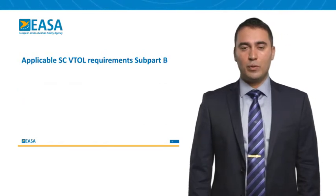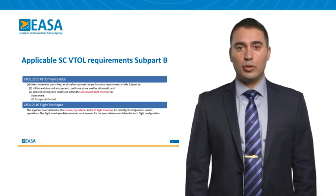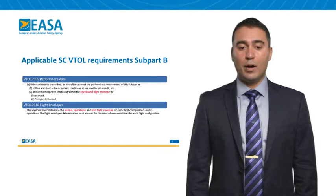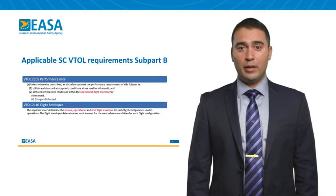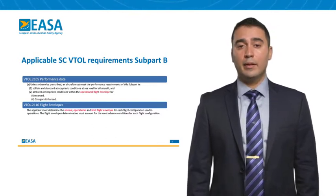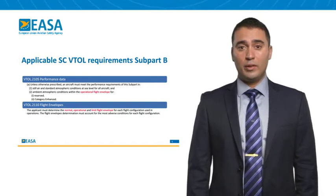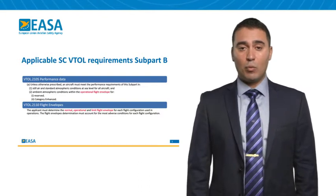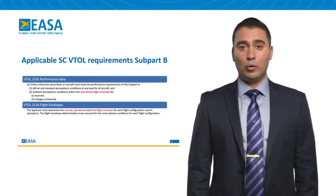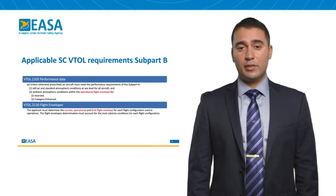Moving to subpart Bravo of the special condition VTOL: requirement 2105, performance data, refers to the operational flight envelope when meeting the requirements of this subpart. Requirement 2110, flight envelopes, states that you need to determine the normal, operational, and limit flight envelopes, taking into account the most adverse ambient conditions.